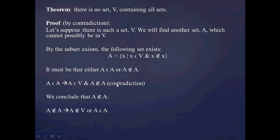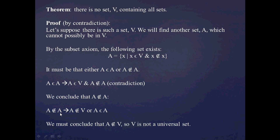Since A is not a member of A, it must have failed to meet at least one entry condition. So either A is not a member of V, or A is a member of A. We already know A is not a member of A, so that second option is ruled out. Therefore our conclusion is that A is not a member of V — a set that cannot be in V, contradicting V's definition as the set of all sets.